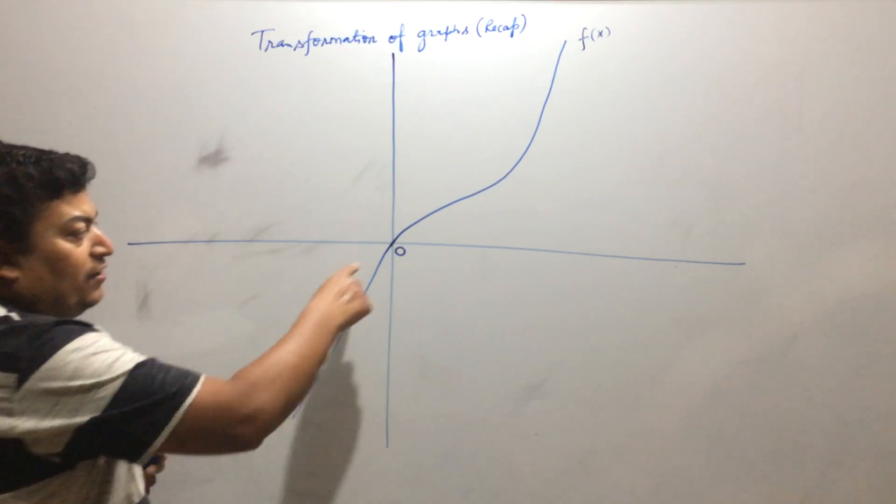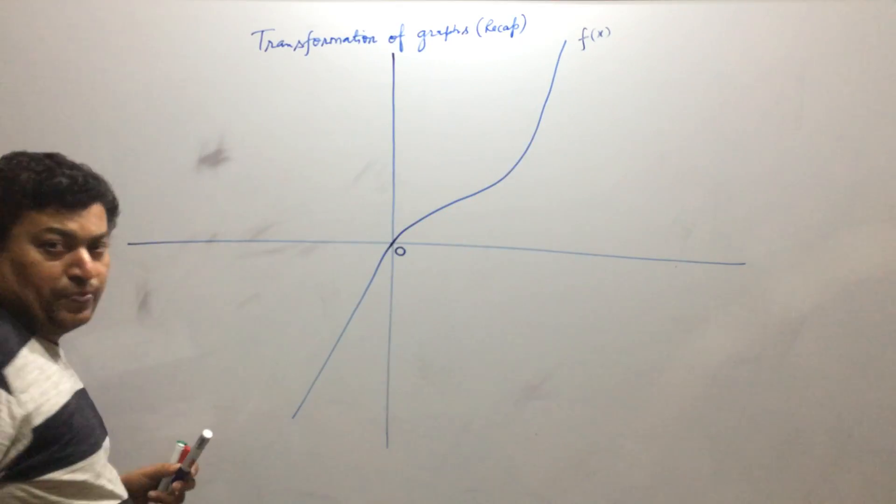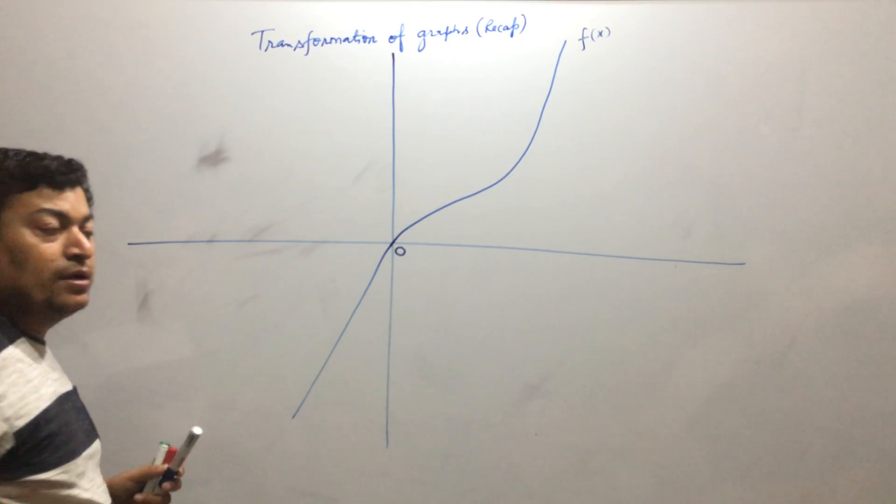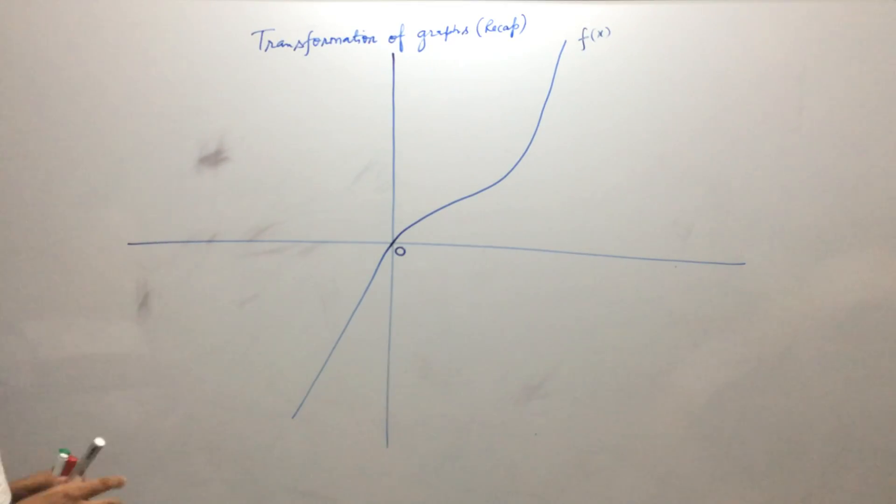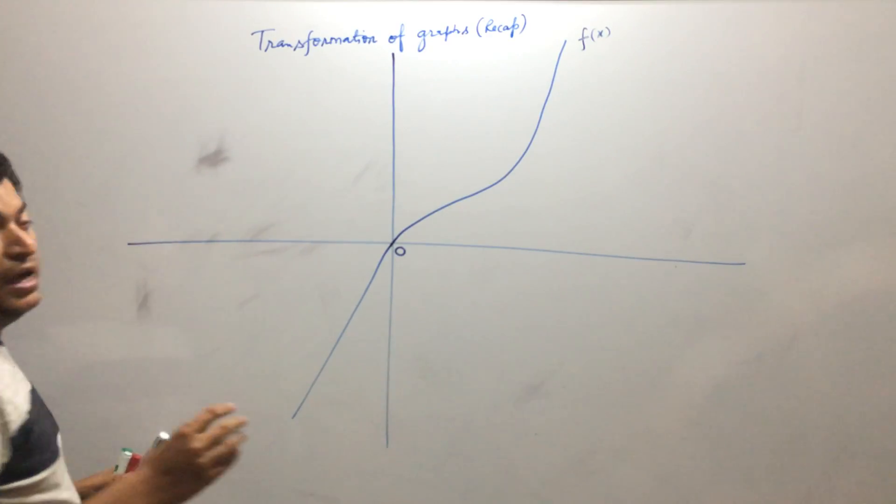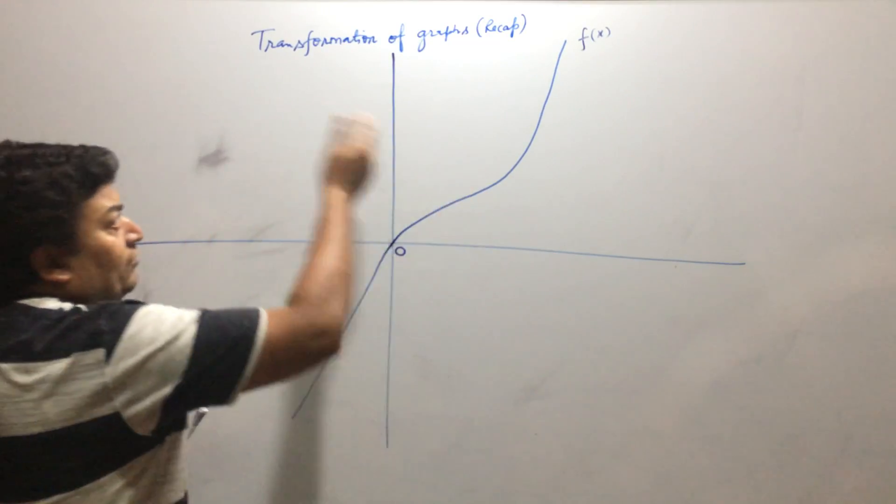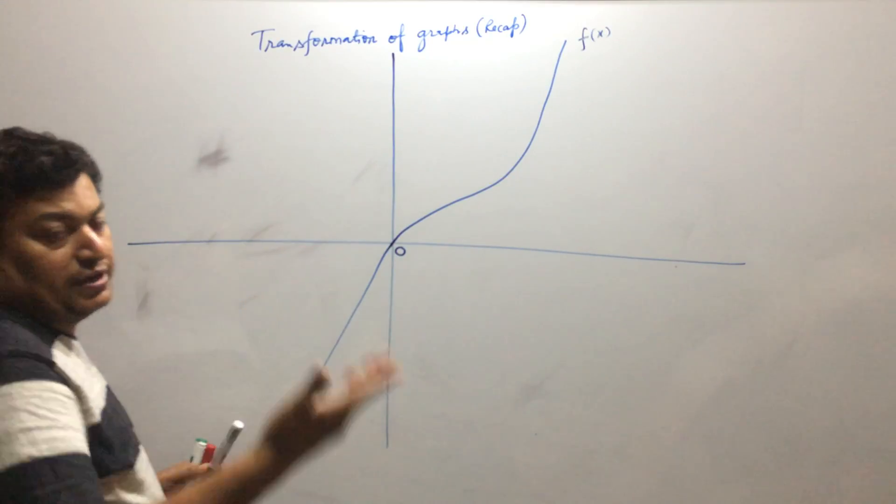So I have taken this graph, some random graph just to explain how 10 transformations work. So in the same axis I will draw the graphs after transformation one by one.